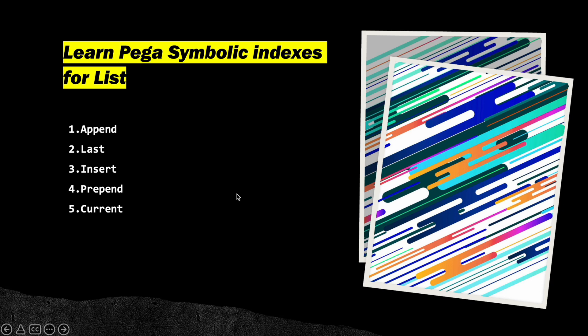Good evening, I hope everyone is doing great. Today we are going to learn a quick topic: symbolic indexes for lists. We use these five symbolic indexes for page lists and value lists. We'll see how we use them — for example, let's say you have an employee page list with items one, two, three, four, and sometimes you don't have an exact integer index value. So in situations where you want to append and don't know how many indexes you already have, we use symbolic indexes.